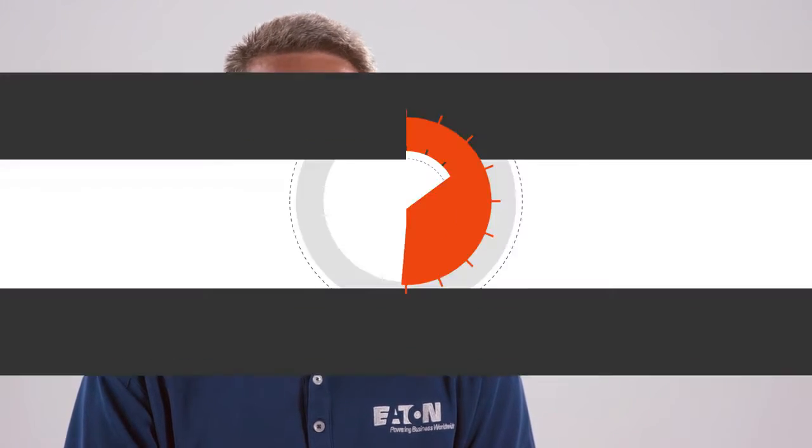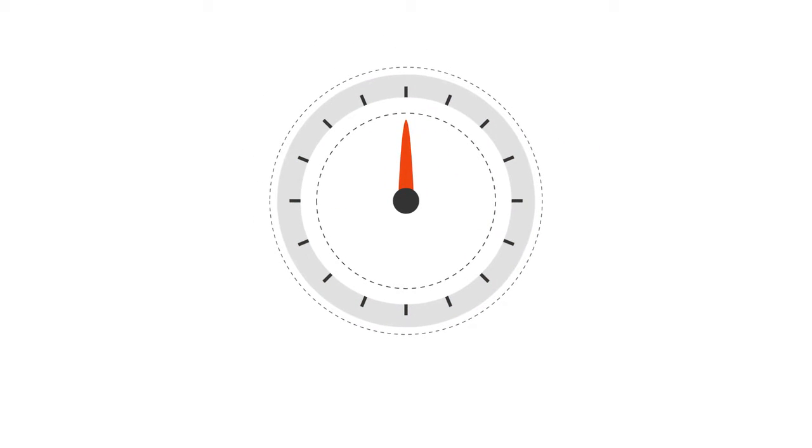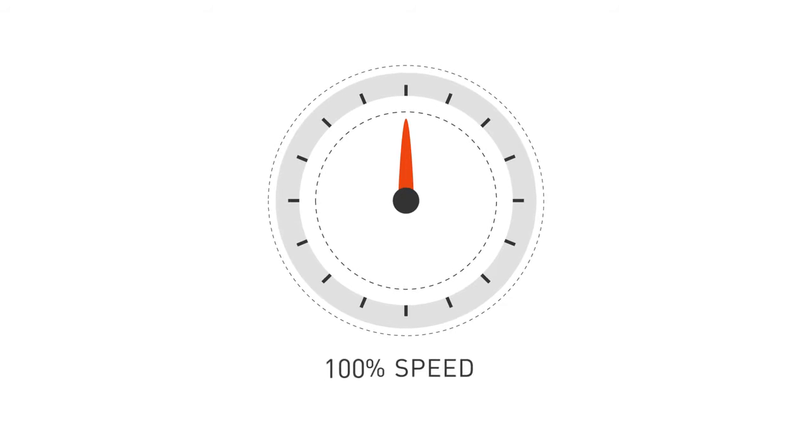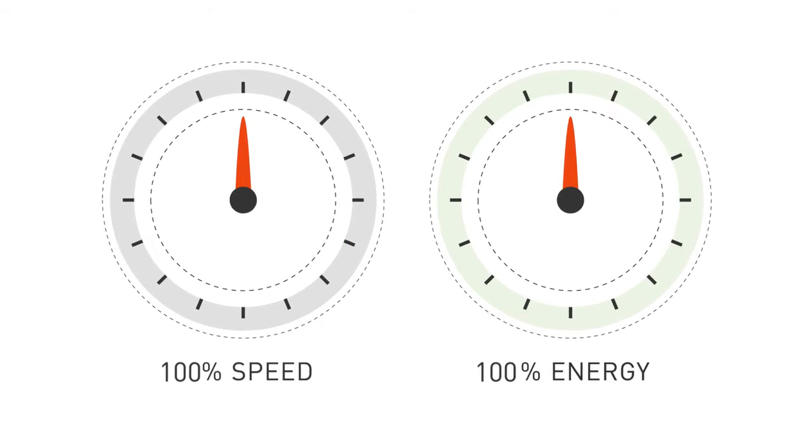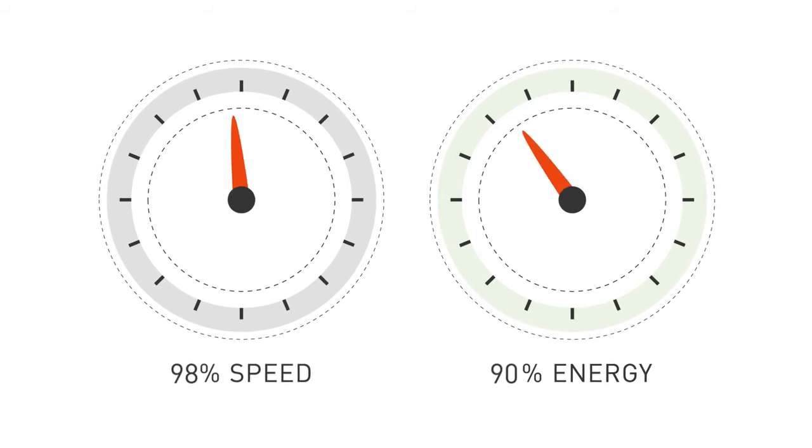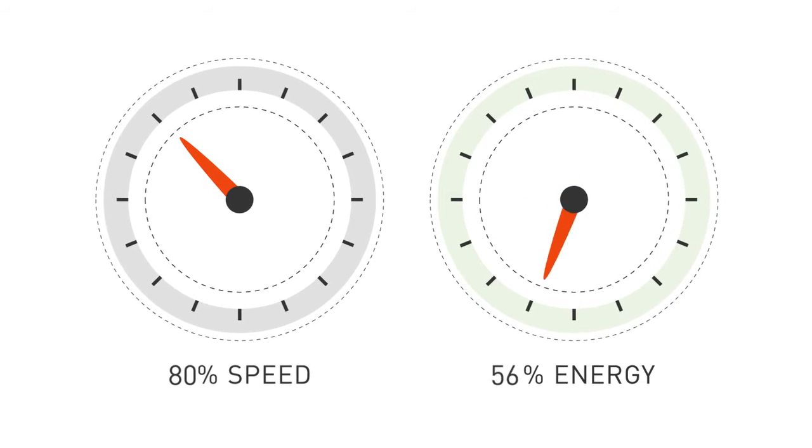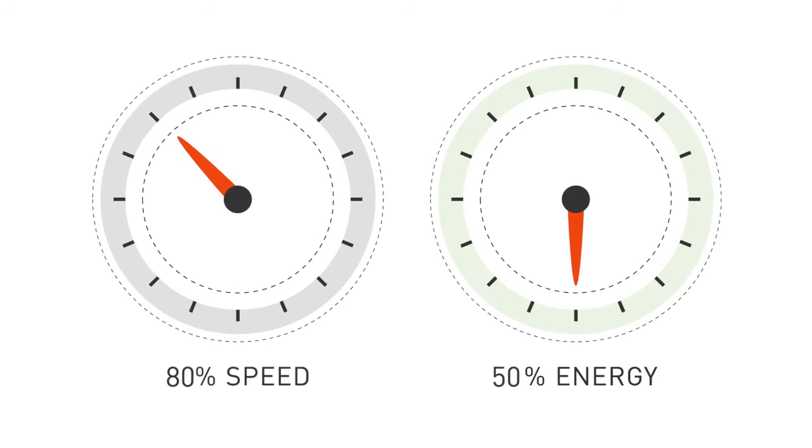There's a number of benefits that come with being able to vary the speed. If I have an application where instead of running at 100% and utilizing 100% of the energy, I can now simply move that down to maybe 80%. I can save as much as 50% energy costs.